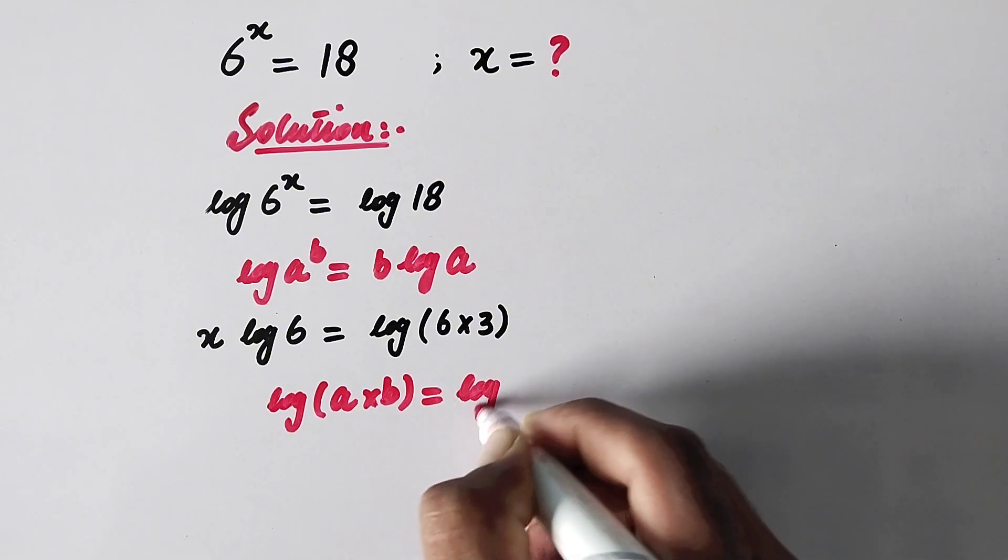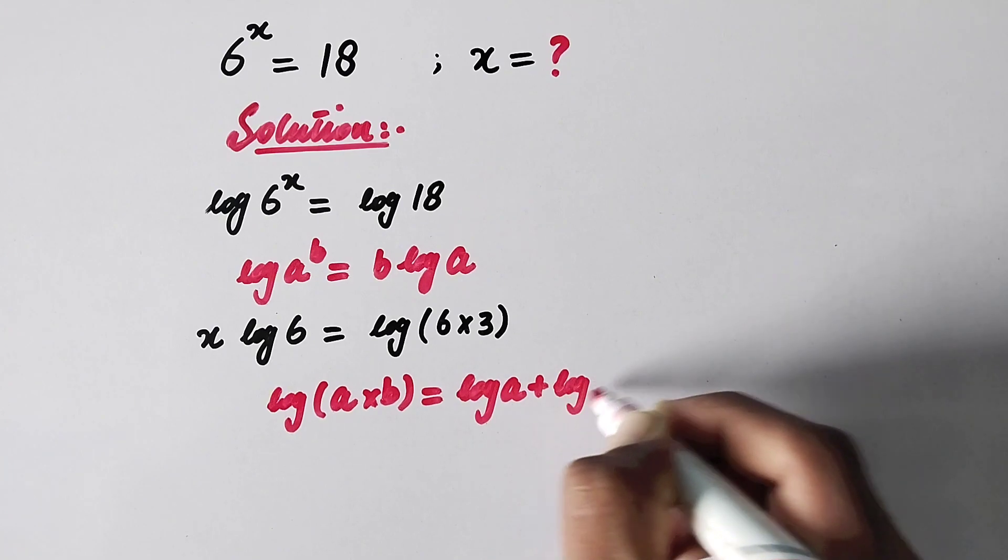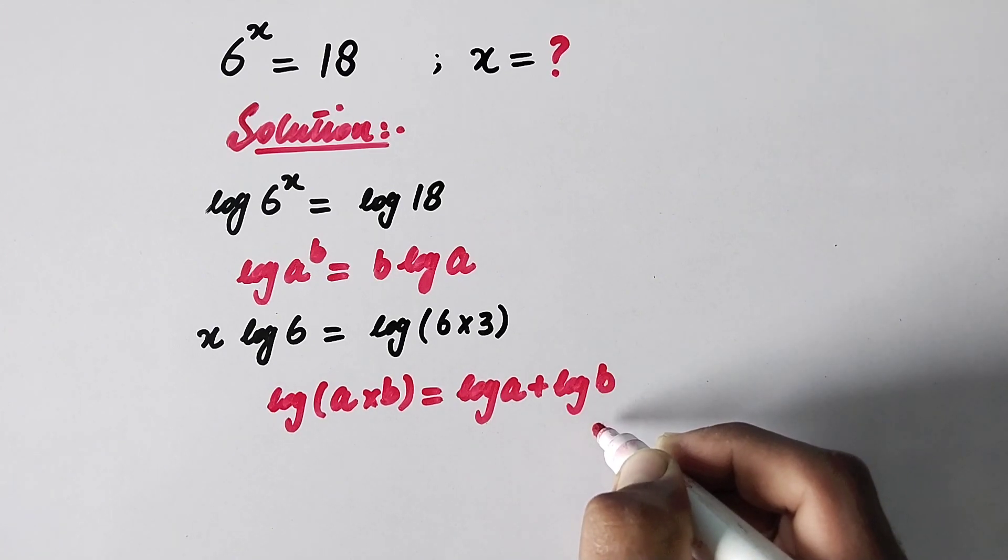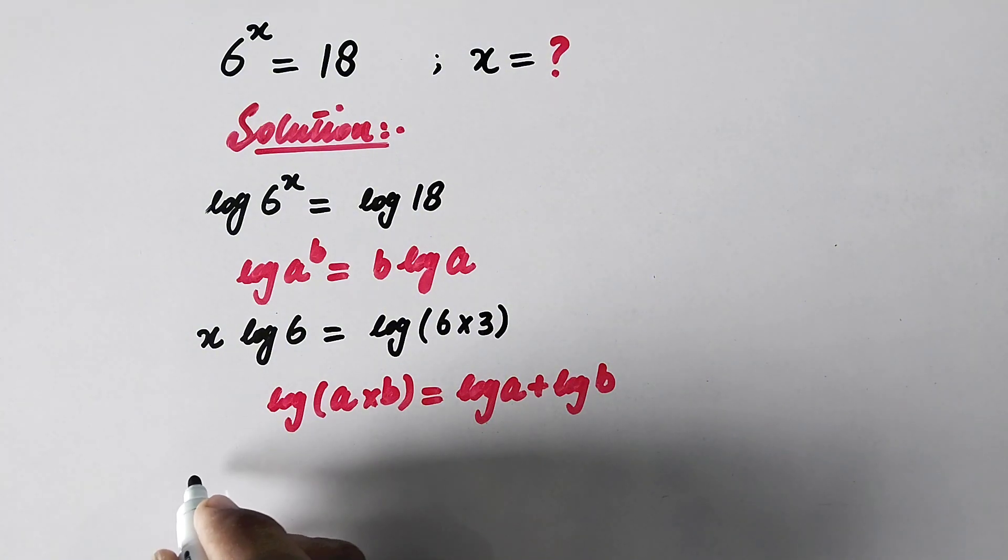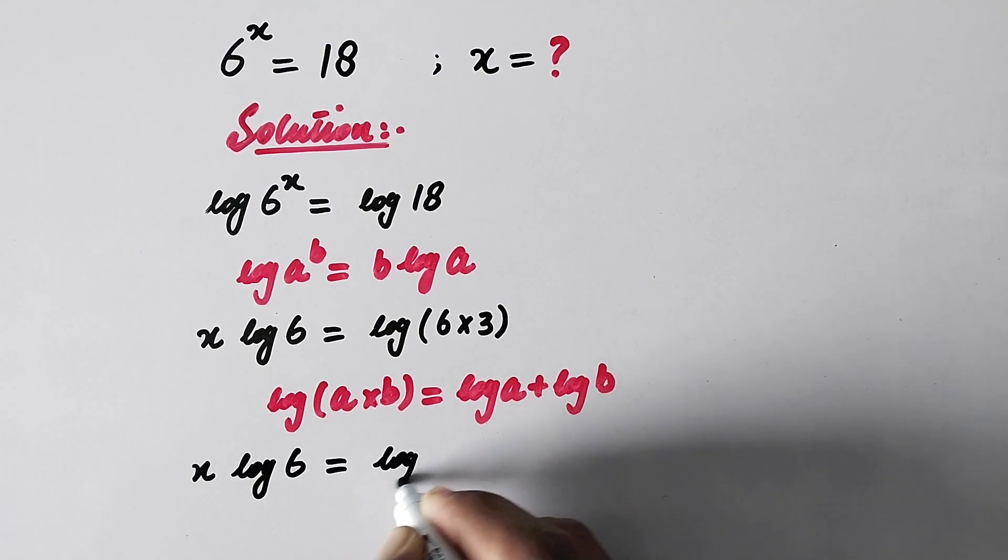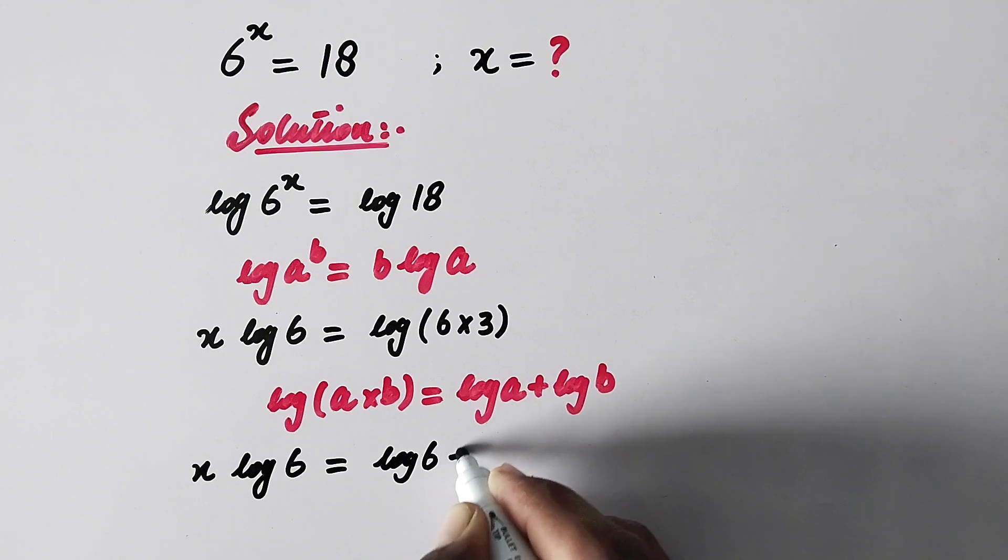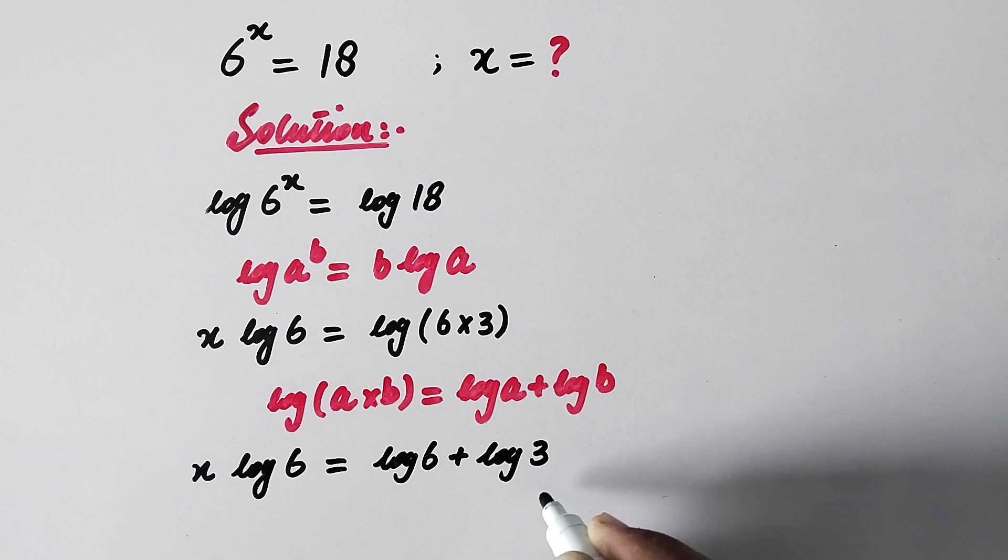We can apply another property of log. As we know that log of a times b is equal to log of a plus log of b. So we can write x times log of 6 is equal to log of 6 plus log of 3.